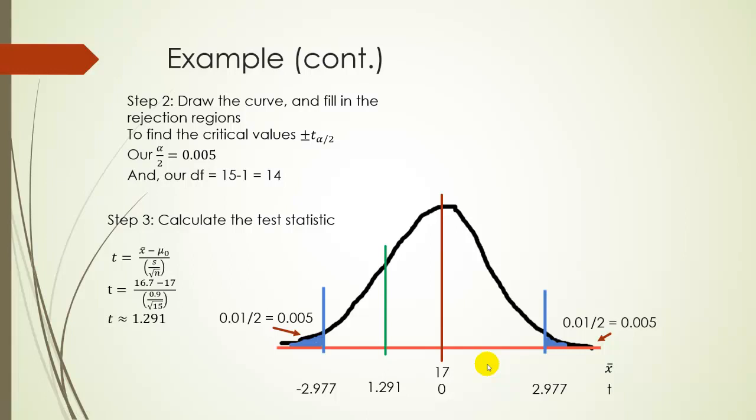So, our T is going to be somewhere over here. It would help if I, oh, that should have been negative 1.29. I just forgot the negative sign. That's why. Alright, so this should be negative. I apologize for that. Because I put it on the correct side. Alright, so our T is negative. So, it's going to be somewhere over here. But it doesn't really matter because what we're looking for here is, does it fall in the rejection region? And the answer is no, it doesn't. It falls in between our two sides of our rejection region. It falls over here, not in that shaded area.